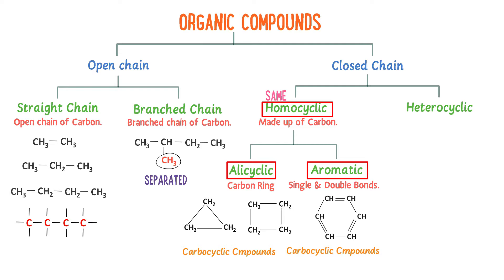Alicyclic organic compounds contain a carbon ring having single bonds, while aromatic organic compounds also contain a carbon ring but with alternate single and double bonds.